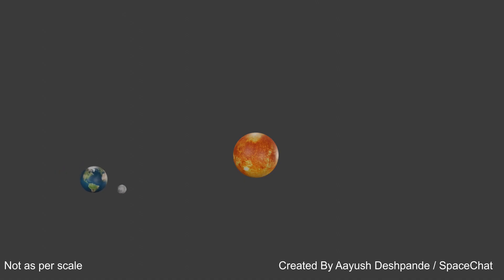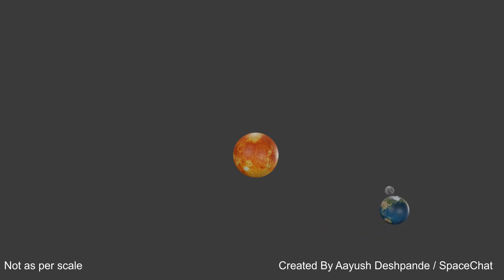We all know that the earth revolves around the sun in 365 days, which is one year, and the moon revolves around the earth in about 28.5 days, which is about one month. If you look closely at this animation, the moon comes in between the earth and the sun every single month, and the earth comes in between the sun and the moon every single month. Then why don't we see solar and lunar eclipses every month?